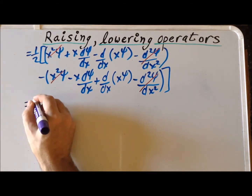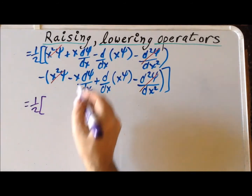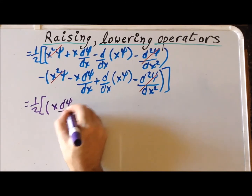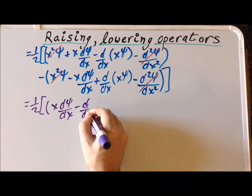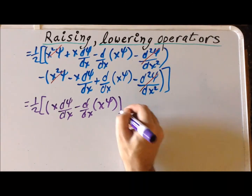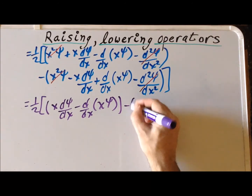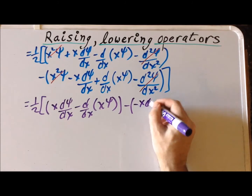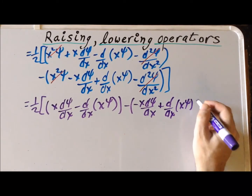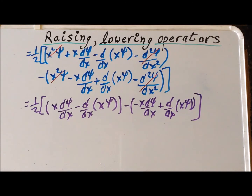The commutator has now reduced to one half. We still have two terms in the first group: x times (dψ/dx) minus d/dx of xψ. Then minus the second group: minus x(dψ/dx) plus d/dx of xψ. To simplify further, we need to work out the explicit derivatives of the products.